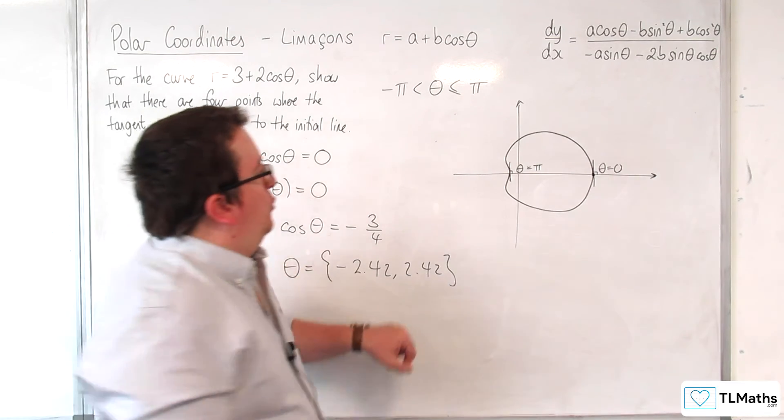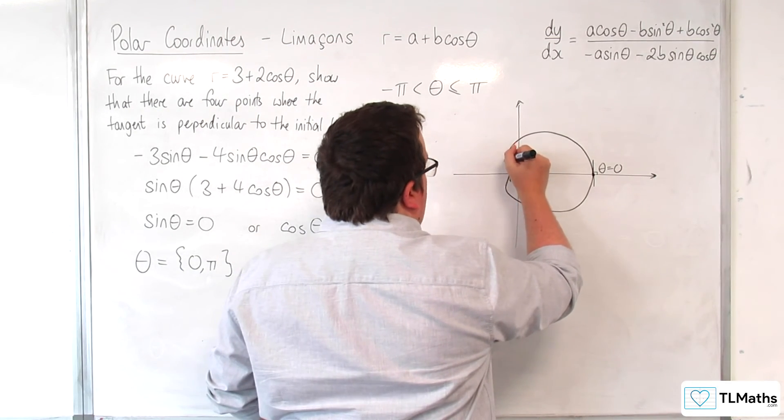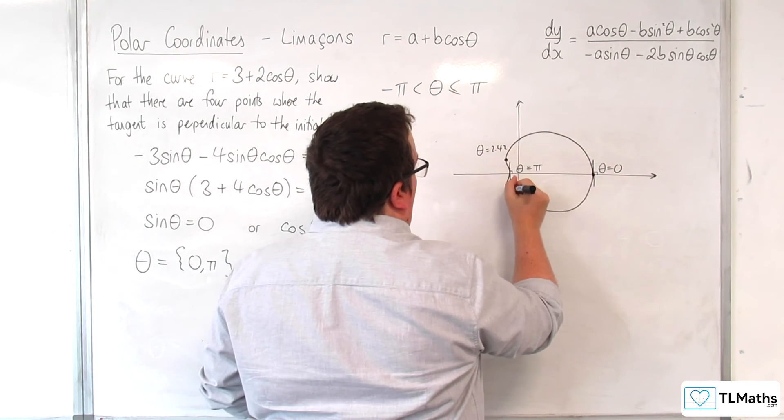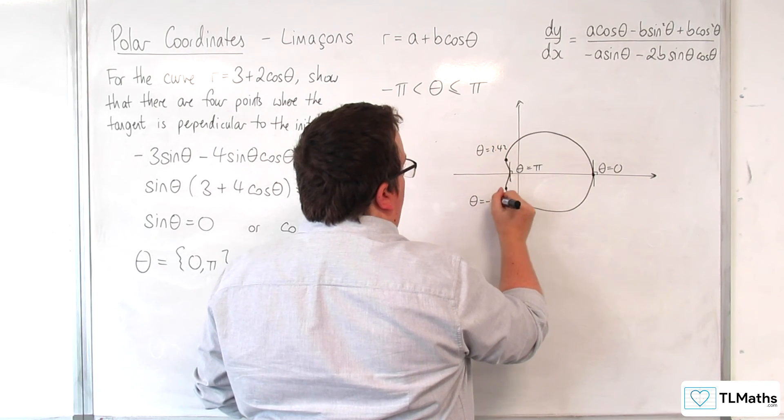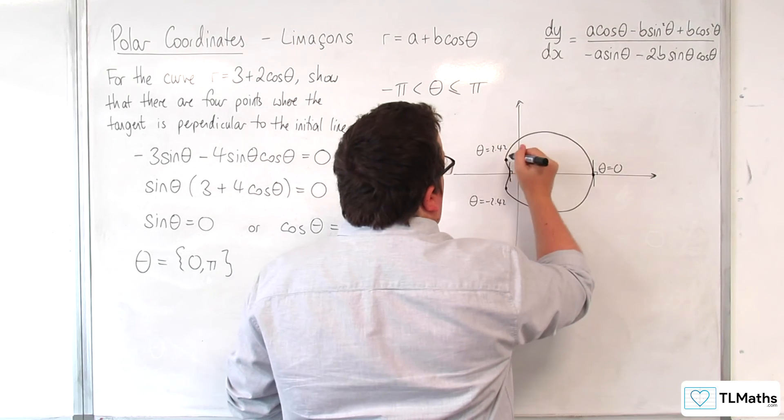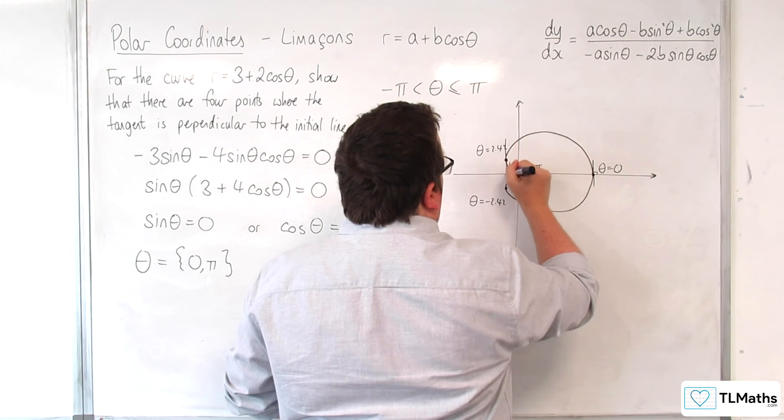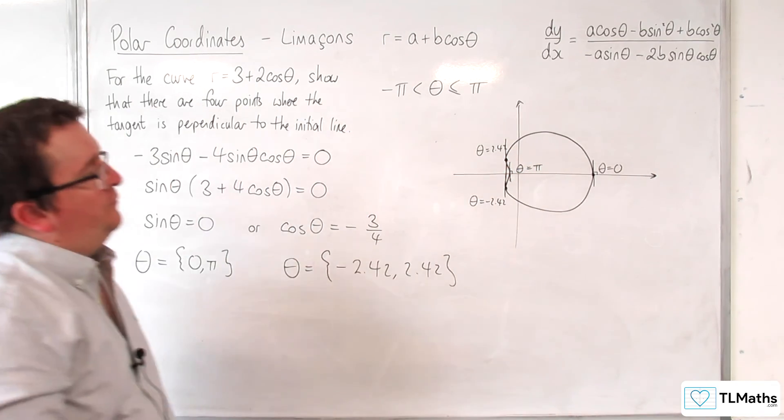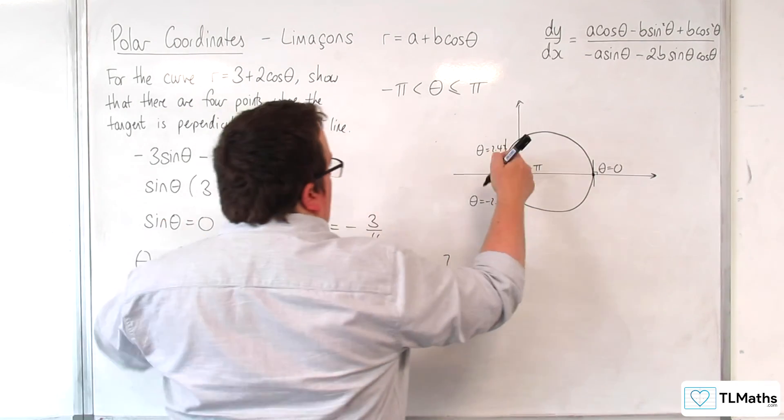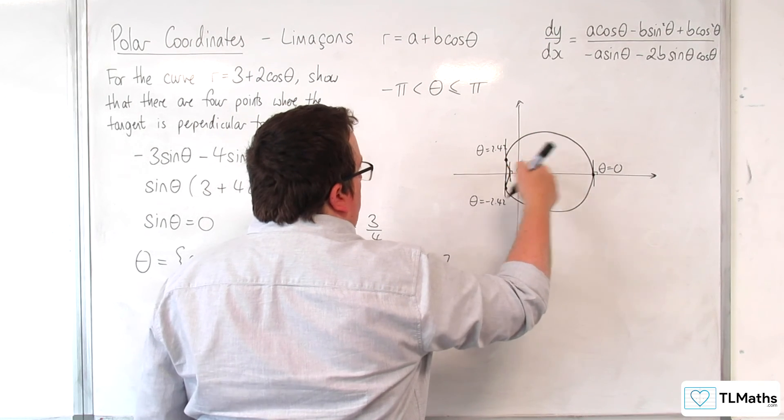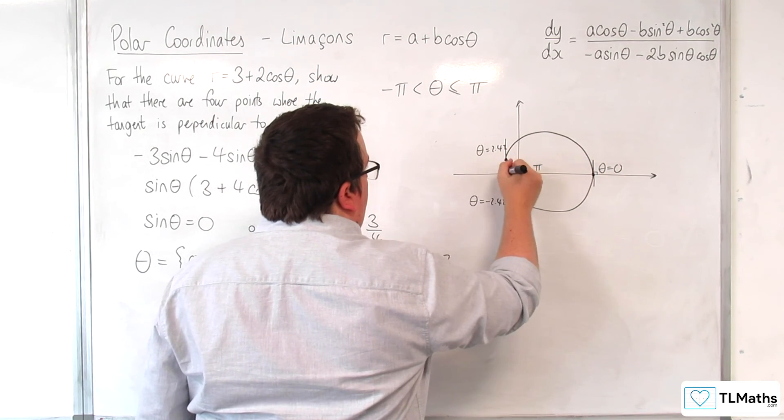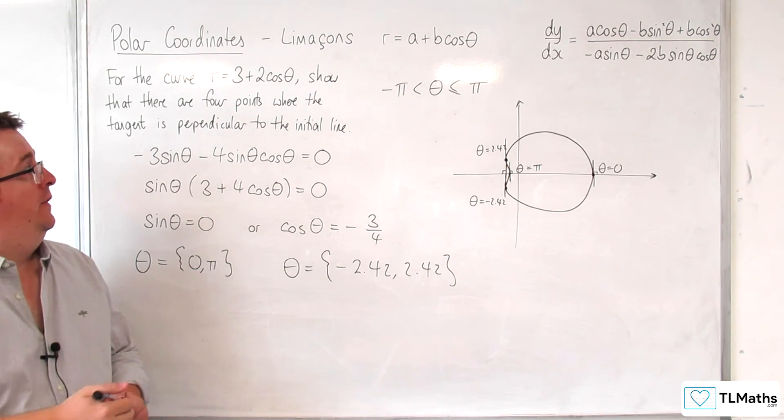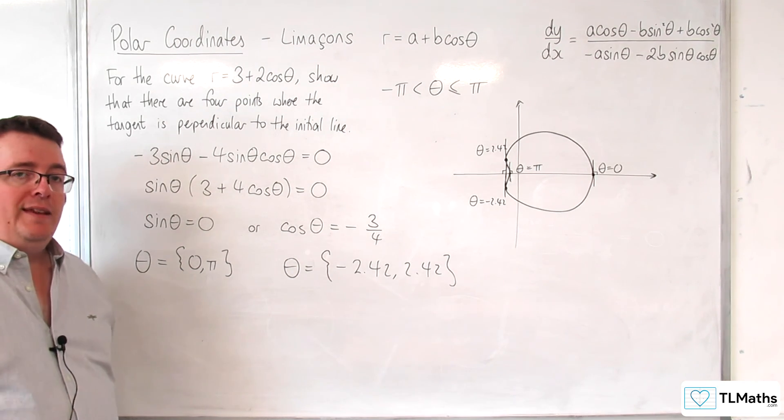Theta equals 2.42 is going to be this point here, and this point here will be the theta equals minus 2.42. And what we'll have is that you could draw a vertical line going through both those because of the symmetry of the graph. And so you've got 1, 2, 3, 4 points where the tangent to the curve is perpendicular to the initial line.